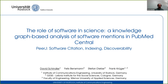In this talk I'm going to present our article 'The Role of Software in Science: a knowledge graph-based analysis of software mentions in PubMed Central,' published in the PHA Special Issue on Software Citation, Indexing and Discoverability. It deals with how we developed a method to automatically extract information about software mentions in scholarly articles. It's joint work with my colleagues Felix Benzmann and Stefan Dietze from GESIS, the Leibniz Institute for Social Sciences, and Frank Krueger from the Wismar University of Applied Sciences.